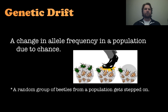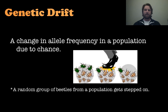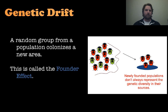Another concept is genetic drift — a change in allele frequency in a population due to a chance or random event. In this case, a random group of beetles from a population gets stepped on. Whatever alleles were in that population are now taken out, and that is a chance encounter.